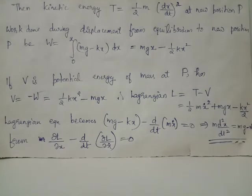∂L/∂x equals mg minus kx, and ∂L/∂ẋ equals mẋ. Thus we have the Lagrangian equation reduced to (mg - kx) minus d/dt of (mẋ) equals 0.